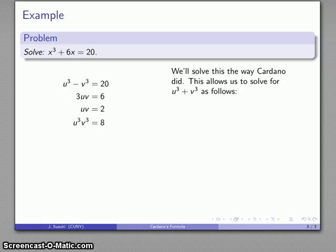The reason that we found this is that we can solve for the sum of the two things. We'll do that by taking our u³ - v³, our difference, and squaring it. That'll give us u⁶ - 2u³v³ + v⁶ = 400. And if I add 4u³v³, let's find out what that is. That's 32.